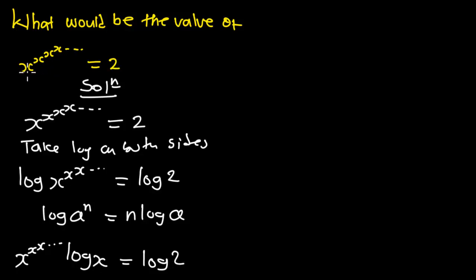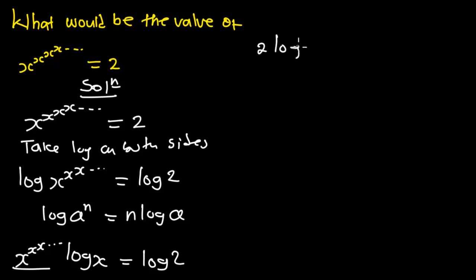But from the question, x to the power x to the power x up to infinity is equal to two. So in place of that infinite tower, we substitute two, giving us two multiplied by log of x is equal to log of two.